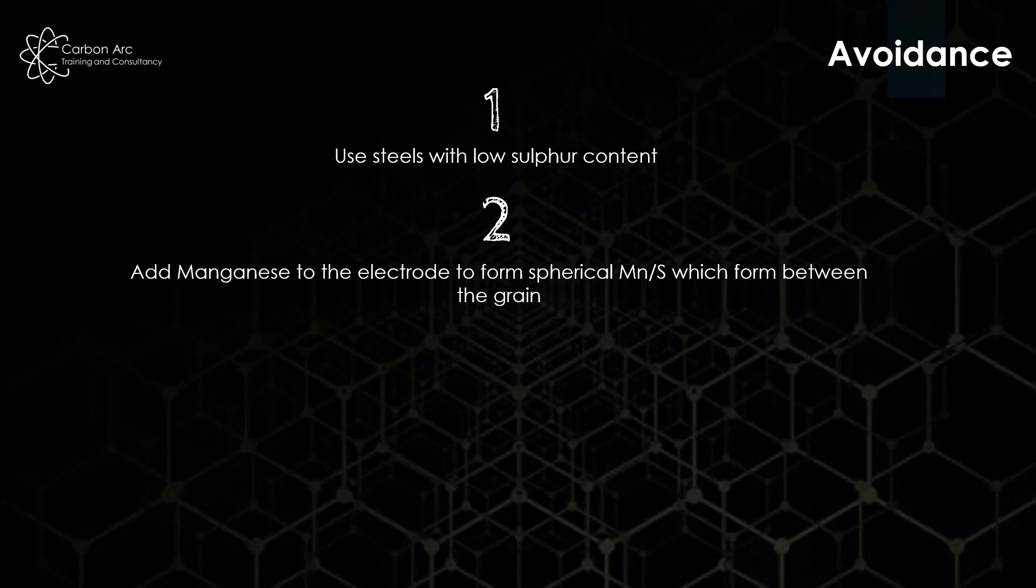If we know we've got to live with some of the sulfur content, by adding manganese we can get the manganese to form with the sulfur and form manganese sulfates which sit along the boundaries of each grain instead of forming a film, and it allows the grain structure to bond properly.